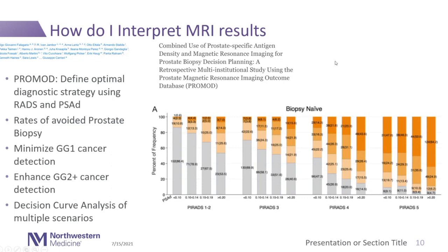A paper published this year called ProMod looked at five different cohorts from four countries and defined optimal diagnostic strategies using RADS score and PSA density. They developed decision curve analyses of multiple scenarios of RADS to PSA density combinations, trying to come up with optimal scenarios. I highly recommend this paper if you're a practicing urologist wanting to develop an optimal scenario to refine interpretation and utility of MRI.